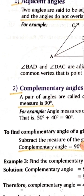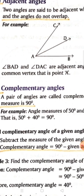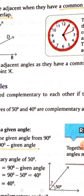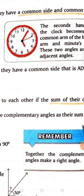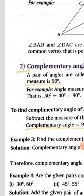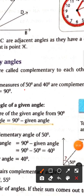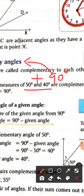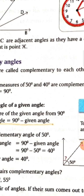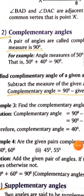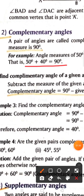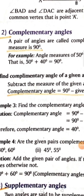The next one is complementary angles. A pair of angles are called complementary to each other if the sum of their degree measures is 90 degrees. Here you have seen two numbers given — if you add them and get 90 degrees, then it is a complementary angle, otherwise not.